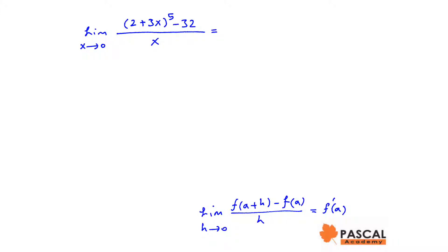If we assume 3x is h, the given limit can be written as limit of 2 plus h to the power of 5 minus 32 divided by 1 over 3 times h as h approaches 0.